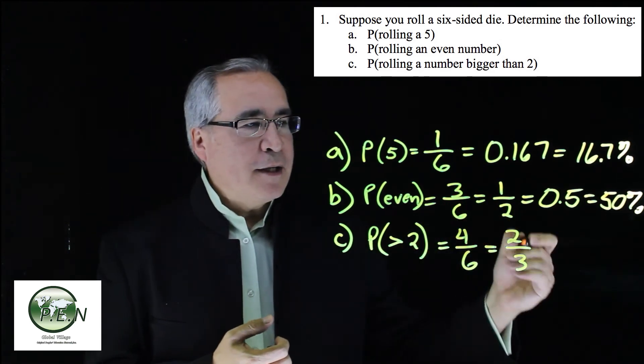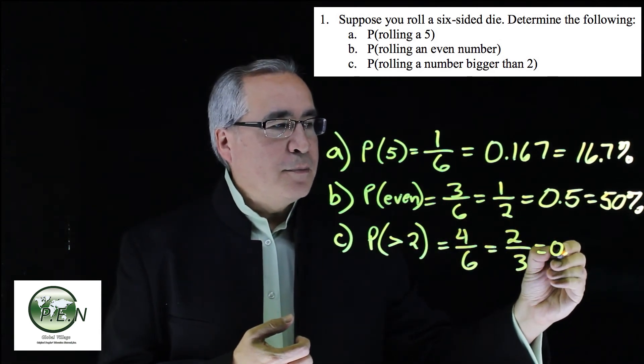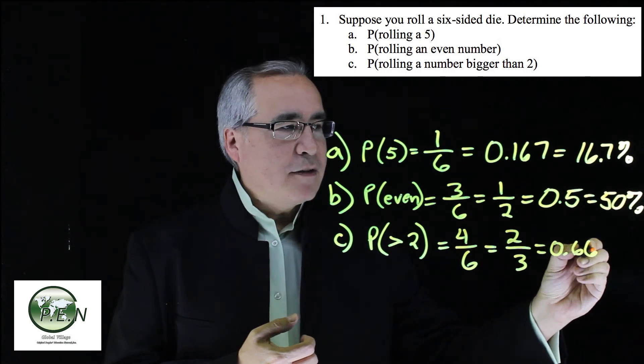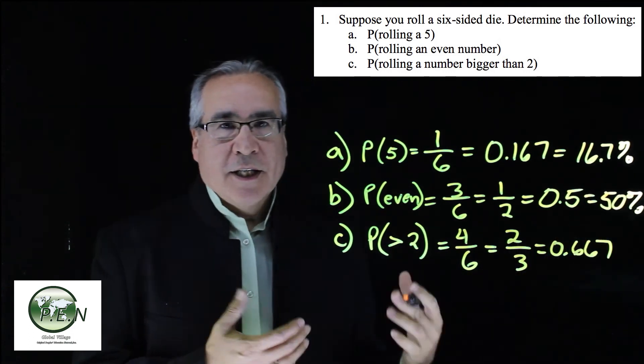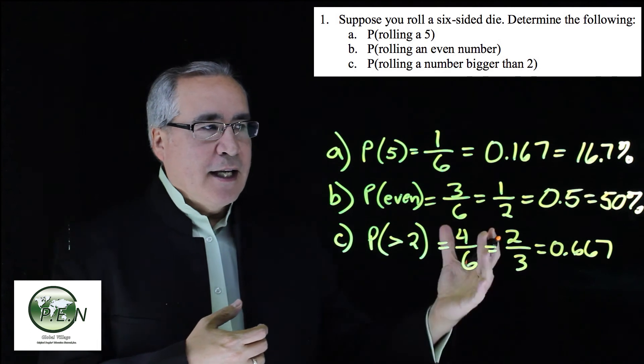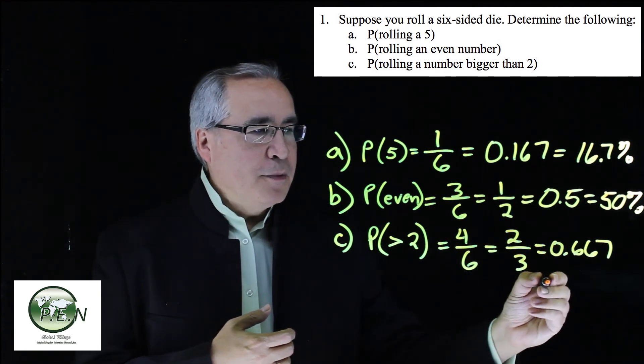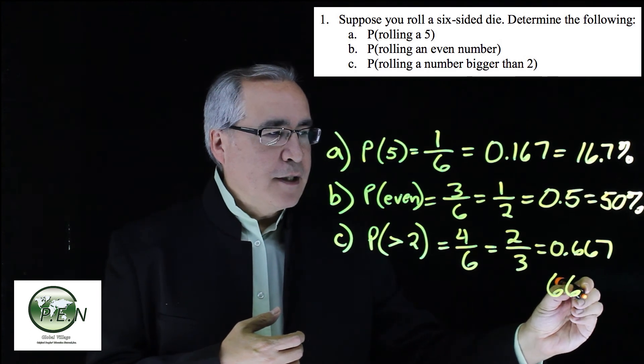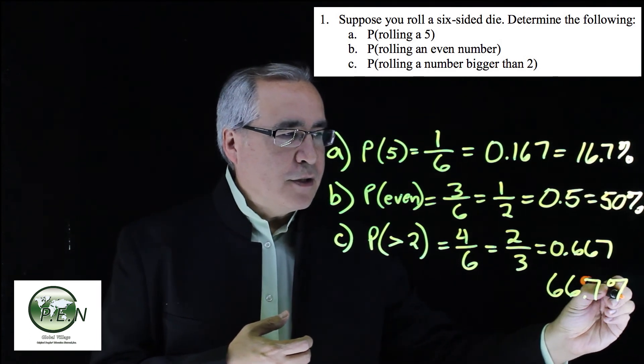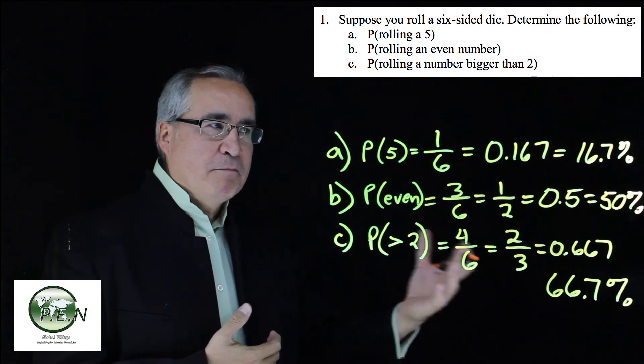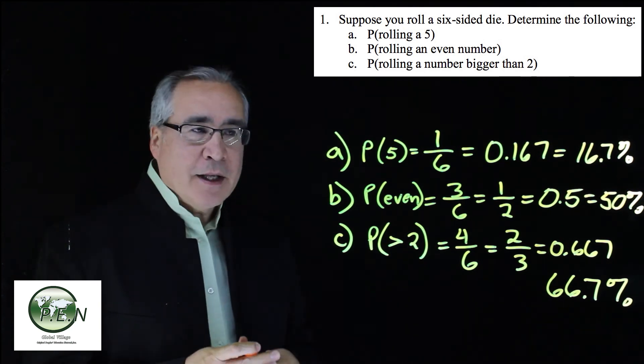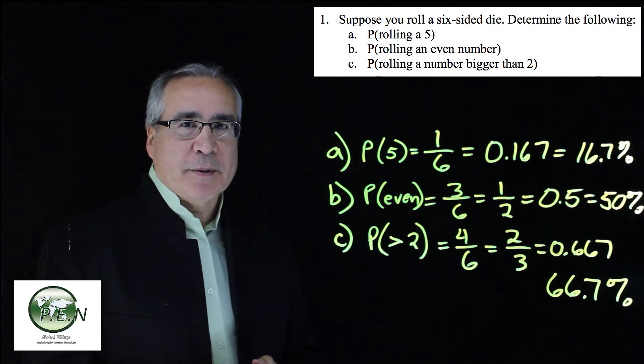You turn it to a decimal. 2 divided by 3 is a 0.66. So let's round it to the third digit, 667. And then when we turn it to a percentage, multiply by 100, we'll move the decimal over two places. And then we get this little percentage sign, 66.7%. Better than half. And that's the beginning part of probability.